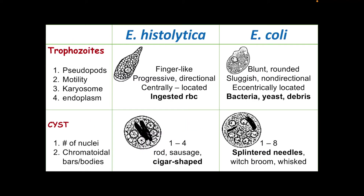Let us differentiate E. histolytica from E. coli — referring to Entamoeba coli the parasite, not Escherichia coli the bacterium. For trophozoites: E. histolytica has finger-like pseudopodia, whereas E. coli has blunt or rounded pseudopodia. For motility, E. histolytica has progressive and directional motility, while E. coli is sluggish and non-directional. For the karyosome, E. histolytica has it centrally located, whereas E. coli's karyosome is eccentric — at the sides.